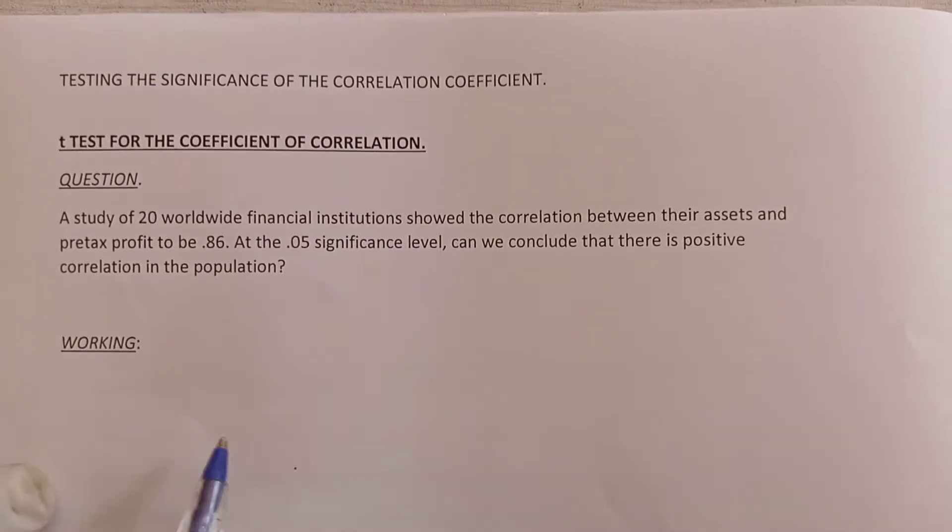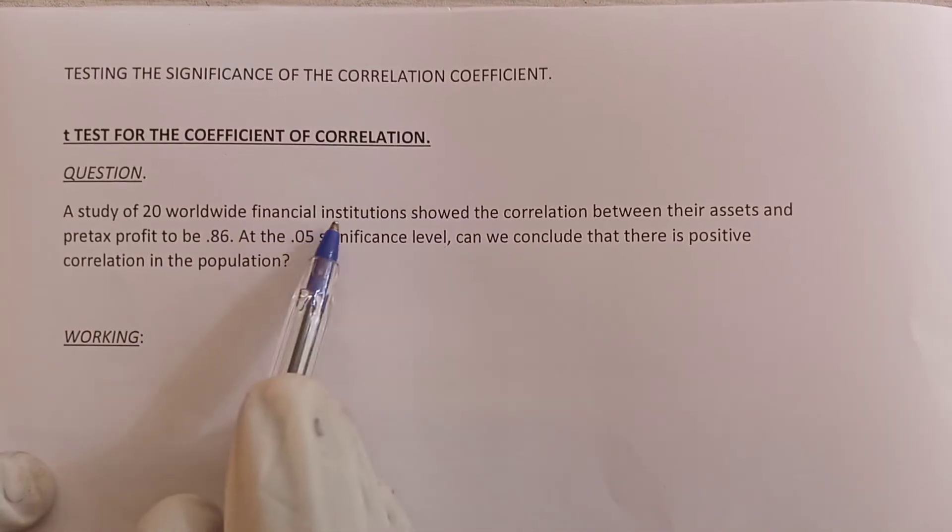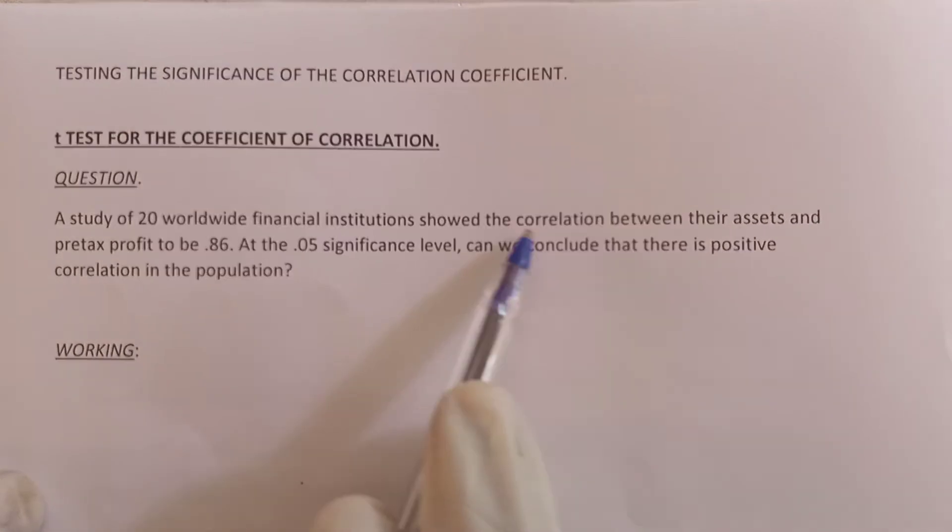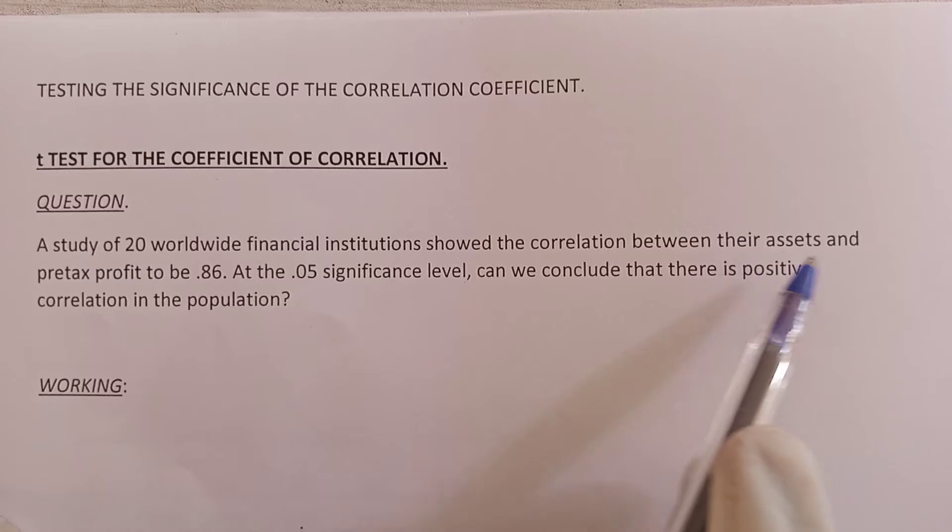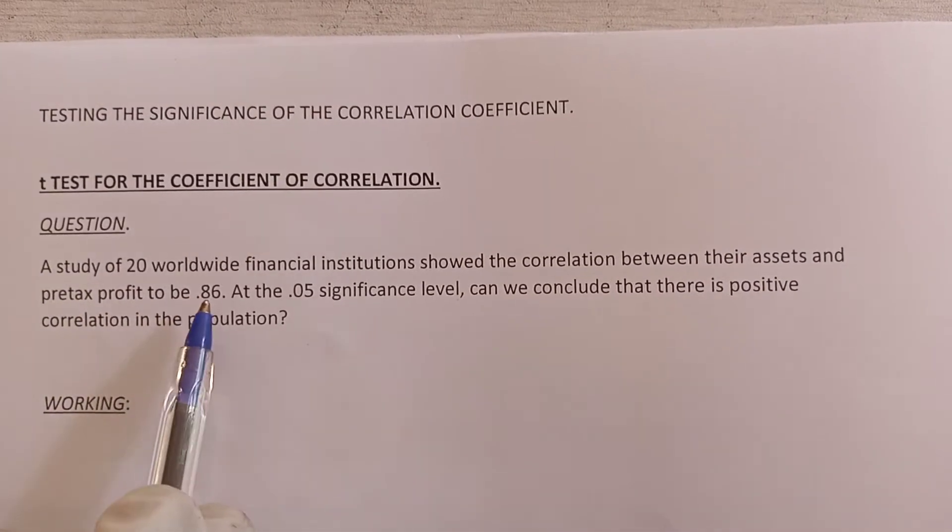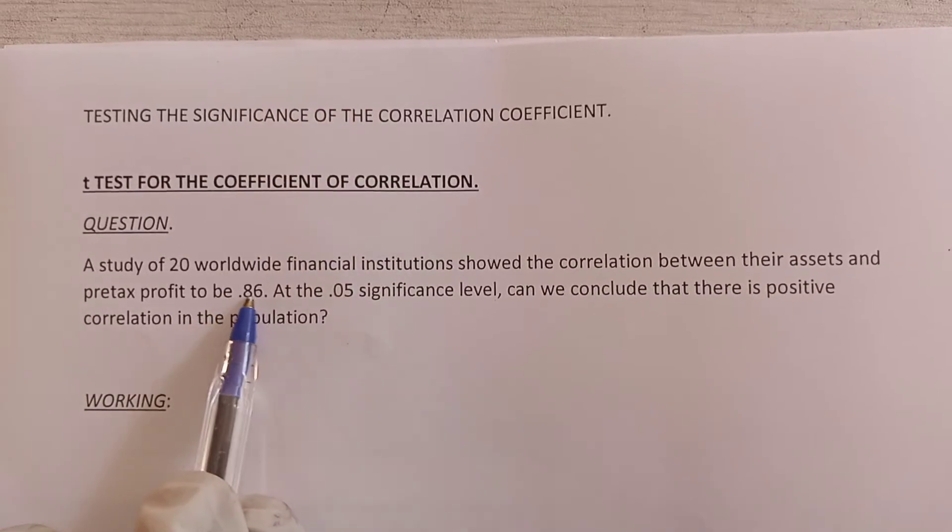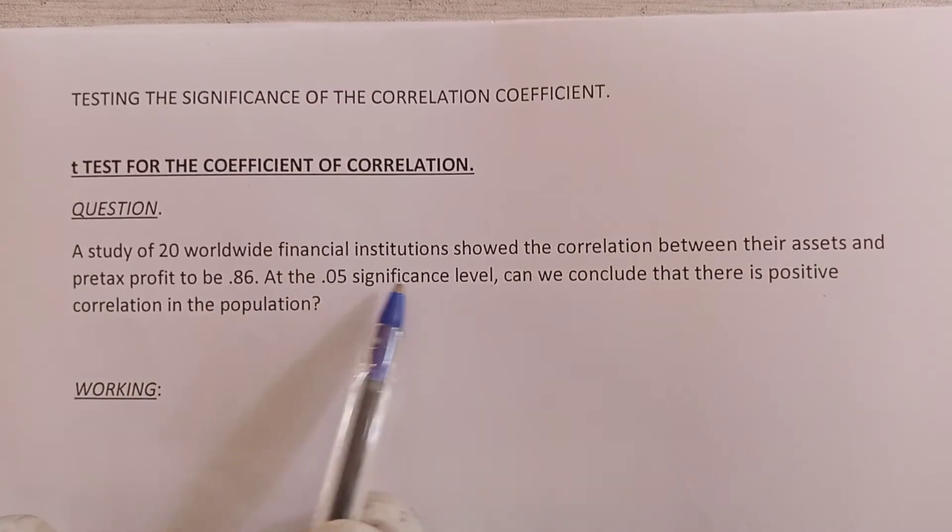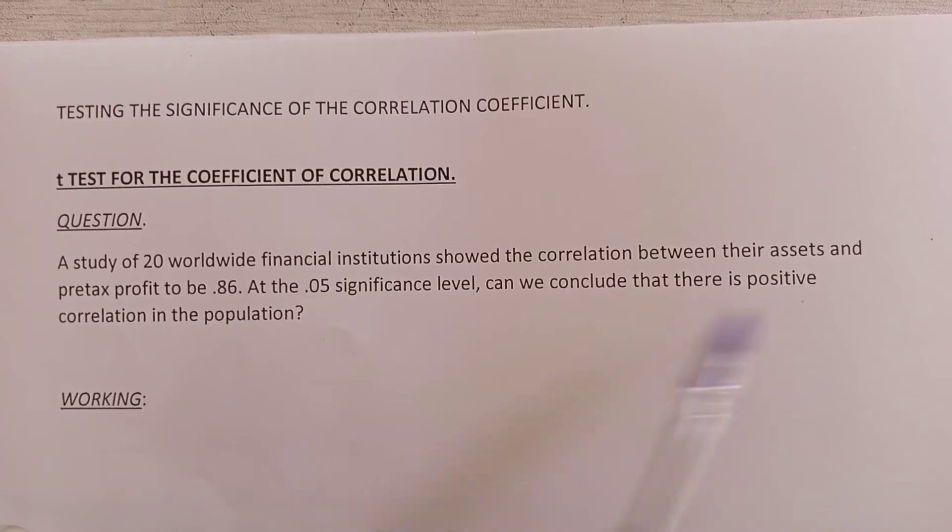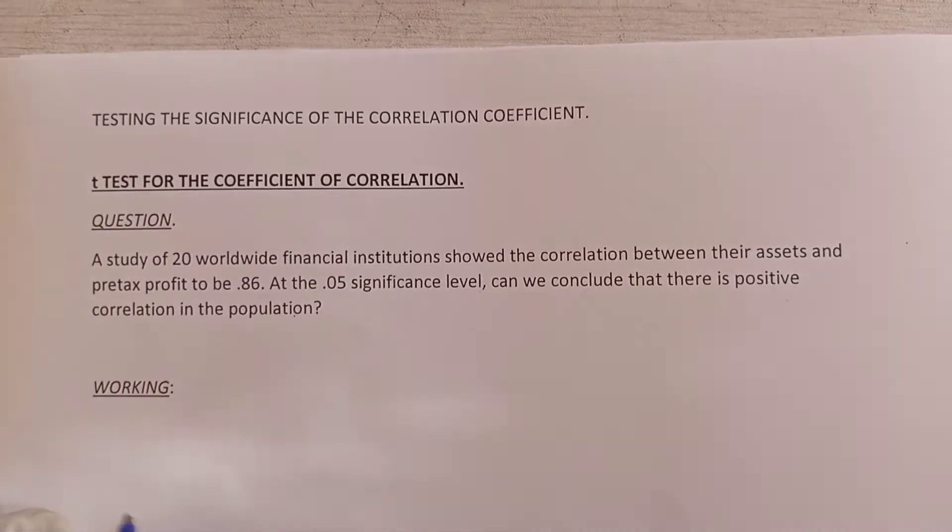Quickly, let's see how to do this. They said a study of 20 worldwide financial institutions showed the correlation between their assets and pre-tax profit to be 0.86. Now at 0.05 significance level, can you conclude that there is a positive correlation between the value?